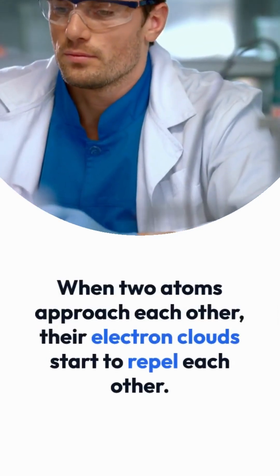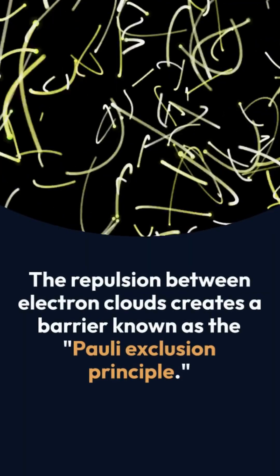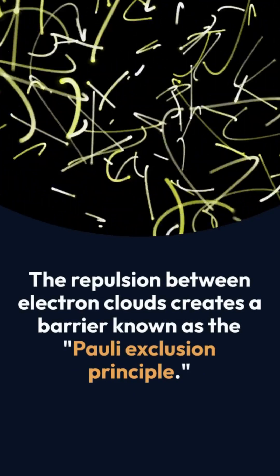When two atoms approach each other, their electron clouds start to repel each other. The repulsion between electron clouds creates a barrier known as the Pauli exclusion principle.